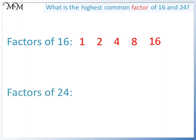Now we look at the factors of 24. We have 1 and 24, 2 times 12, 3 times 8, and 4 times 6. We are looking for common factors. These are factors that are of both 16 and 24.